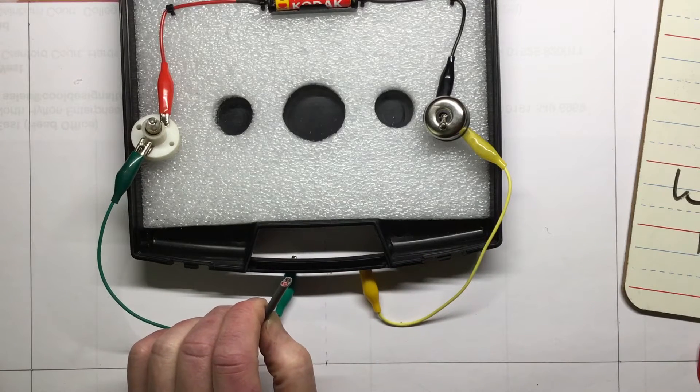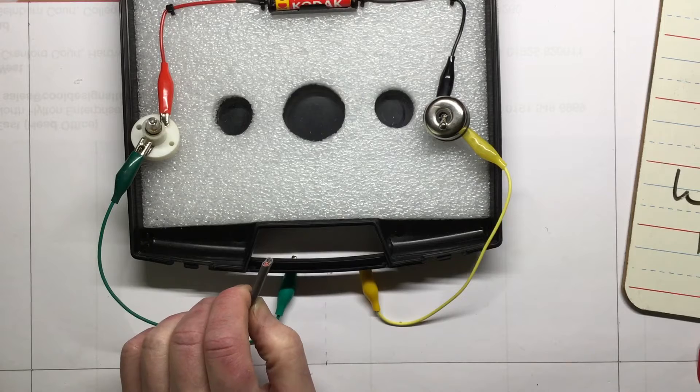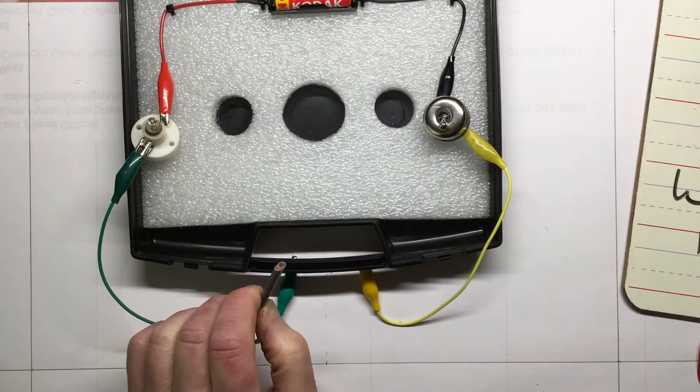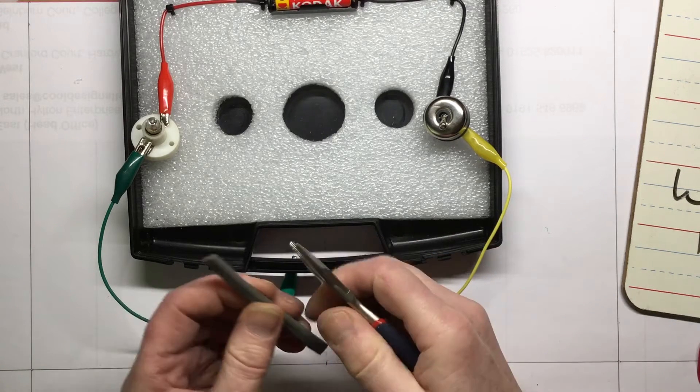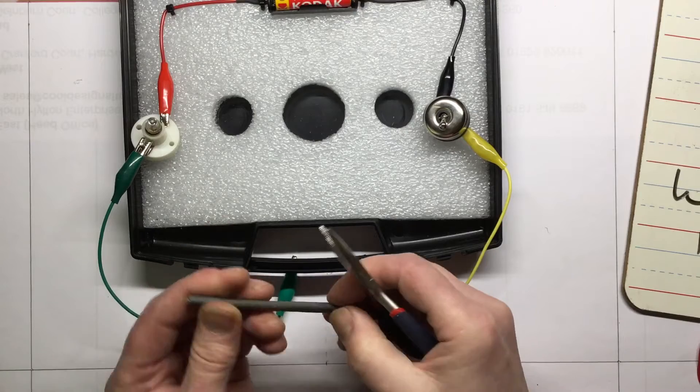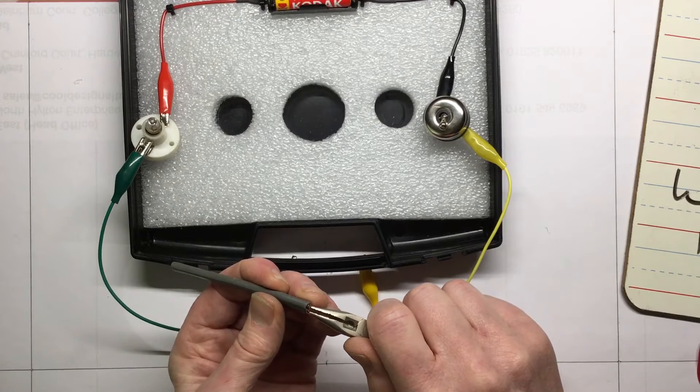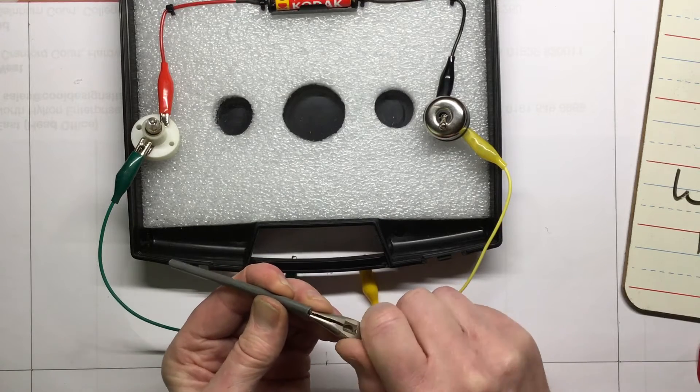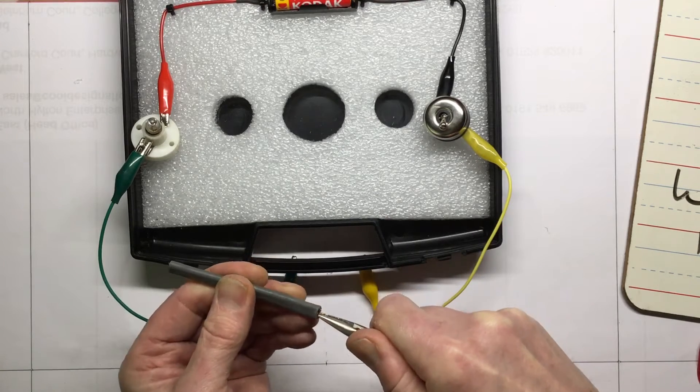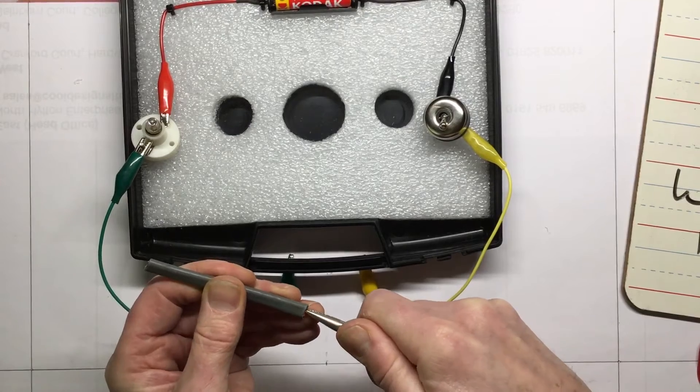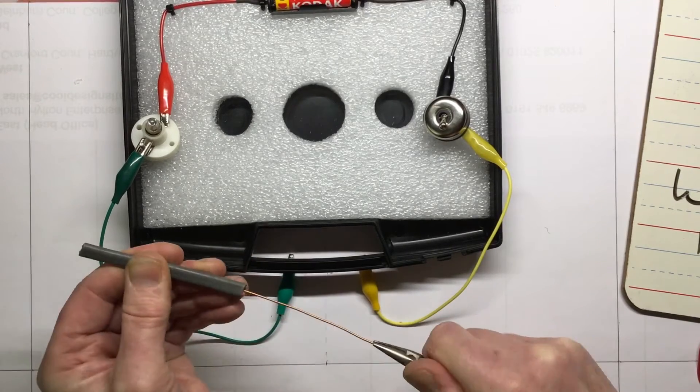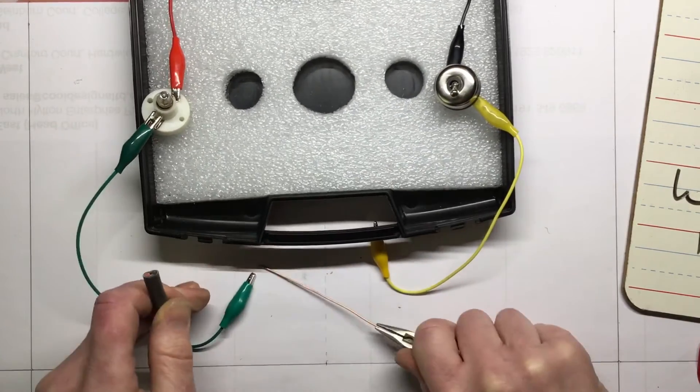We'll take some pliers and we'll actually remove a piece of the conductor and have a closer look, because we don't just want to know that it works, we want to know really what it's made from. So I'm just going to get a fine pair of pliers and pull on that central conductor.